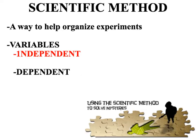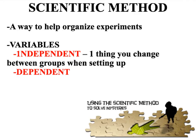To keep experiments organized, there are going to be some rules. The first rule is that scientific experiments have two types of variables: the independent variable and the dependent variable. The independent variable is simply the one thing you change between groups when setting up. It was no mistake that I replaced the I in independent variable with the number one — that's a mnemonic, a memory trick, to remember that independent is the one thing that changes.